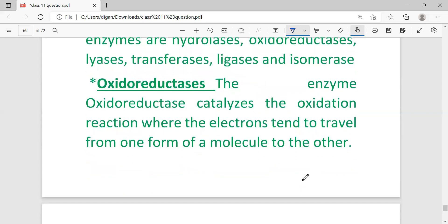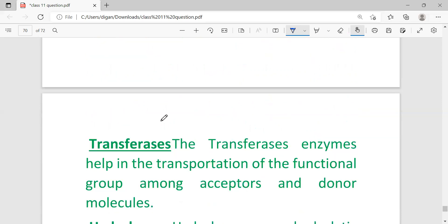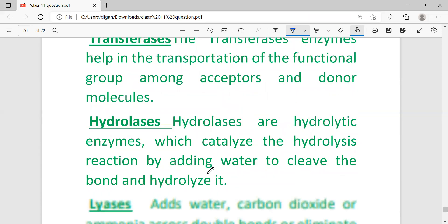These six kinds of enzymes are: oxidoreductase, transferase, hydrolase, lyase, isomerase, and ligase. Oxidoreductase catalyzes oxidation reactions where electrons tend to travel from one form of molecule to another. Transferase helps in the transportation, that's why it's known as transferase.